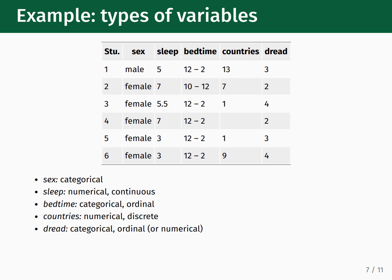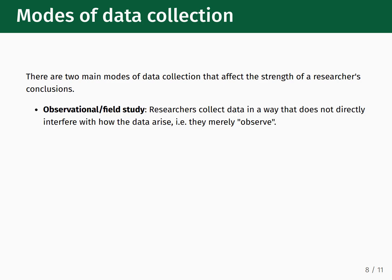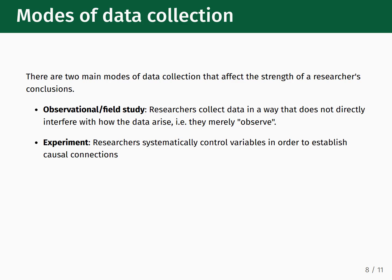There are two main modes of data collection you can use to produce datasets. It's worth pointing out that these modes actually affect the strength of a researcher's conclusions. The first mode is what's called an observational or field study, where researchers collect data in a way that does not directly interfere with how the data arise — they merely observe. This contrasts with the second mode, known as experiments, where researchers systematically control variables in order to establish causal connections.